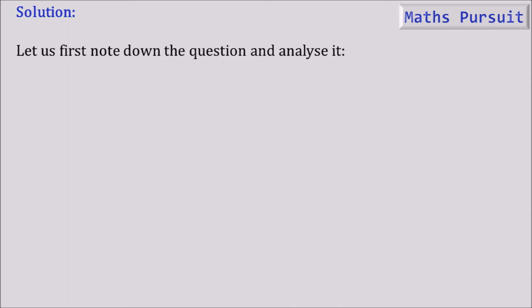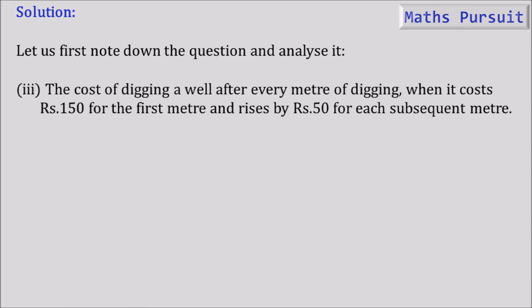The cost of digging a well after every meter of digging when it costs Rs.150 for the first meter and rises by Rs.50 for each subsequent meter. So what we can understand from this question is it costs Rs.150 for the first meter. After digging the first meter, the person needs to pay Rs.150, and then the cost rises by Rs.50 for each meter of subsequent digging.